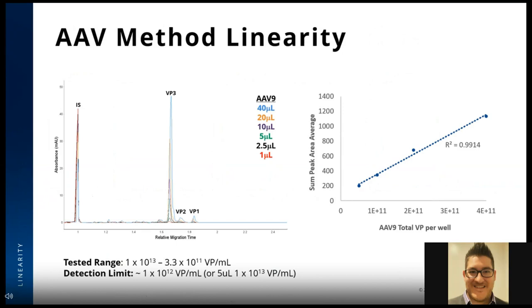After testing reproducibility, we tested the linearity of the method. We took various starting volumes of a 1×10¹³ VP/mL sample of AAV9 from 40 microliters down to 1 microliter, and processed them through the workflow before analysis on Maurice. This range equates to a test between 10¹³ and 10¹¹ viral particles per mL. We detected signal using as little as 5 microliters of stock material and observed excellent linearity across the test range. This detection range is nicely in line with AAV concentrations available at late stages of production.